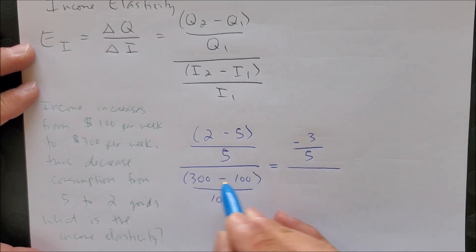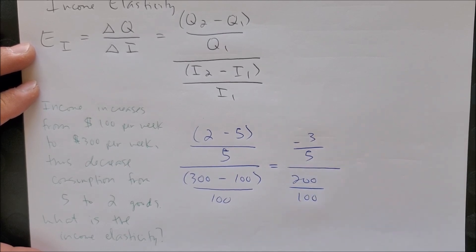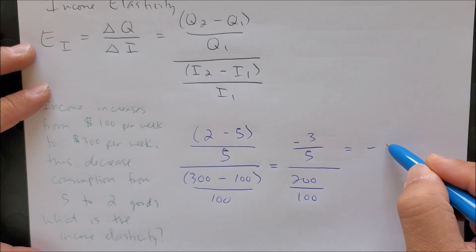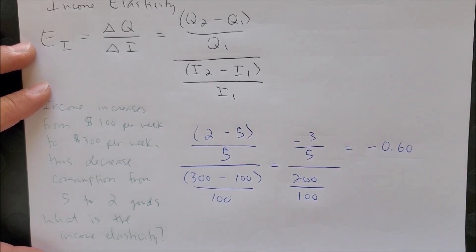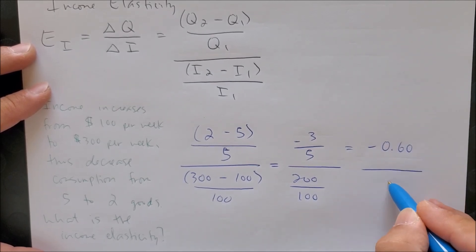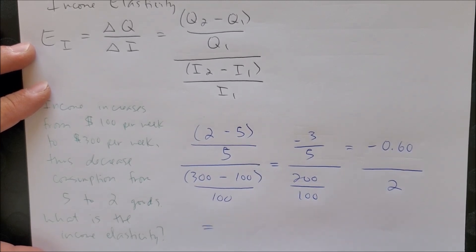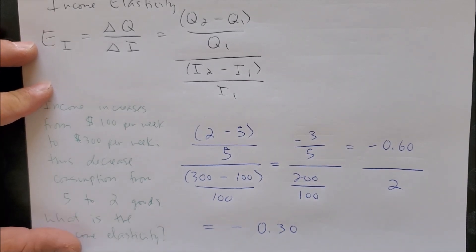And once we have the equation set up, now all we can do is just divide. Let's go ahead and divide the numerator: we get negative 3 over 5, and the denominator we get 200 over 100.